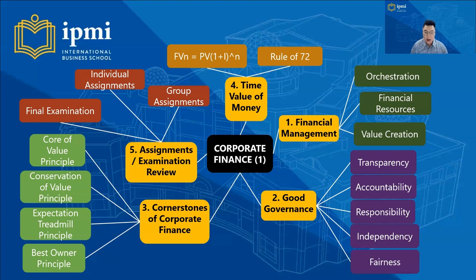Number one is financial management — we are talking about optimal orchestration of internal and external financial resources towards significant and sustainable value creation. Number two is good governance, which covers transparency, accountability, responsibility, independency, and fairness — summarized as TARIF.